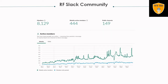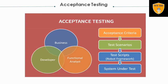The RF Slack community currently has around 8,129 members, which will definitely grow. Weekly active members total 444, where you can get solutions quickly. There are 149 public channels. If you find any difficulties while scripting, taking logs, or anything else, you can reach out to the community members and they will resolve it as soon as possible.